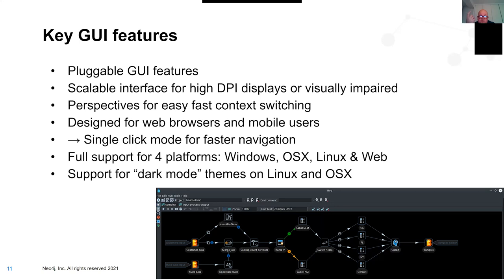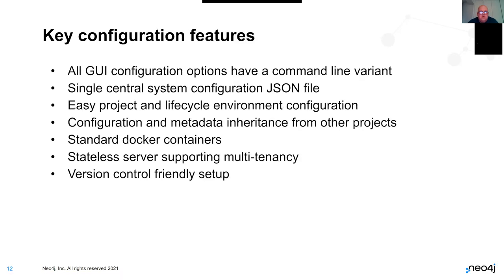We support four platforms: Windows, Apple, Linux, and the web. We introduced single-click mode for faster navigation - it took some getting used to for people coming from Kettle where everything was double-click, but once you get used to it, it's a real time saver. All GUI configuration options have command line variants, because life is not always GUI - we're often stuck on a server somewhere. Even the most obscure GUI options can be mapped through a command line interface. We have a single central system for configuring things - one JSON file, not a hundred.